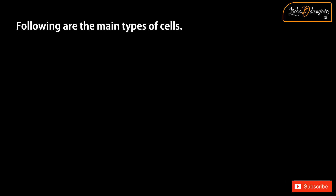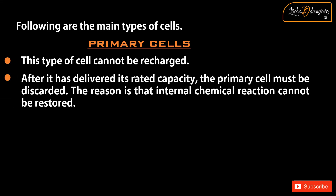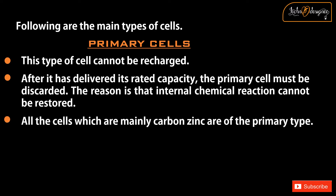Following are the main types of cells. Primary cells: This type of cell cannot be recharged. After it has delivered its rated capacity, the primary cell must be discarded. The reason is that the internal chemical reaction cannot be restored. All the cells which are mainly carbon zinc are of the primary type.